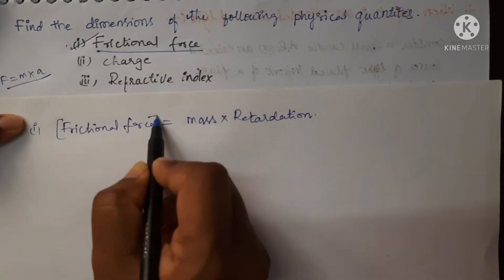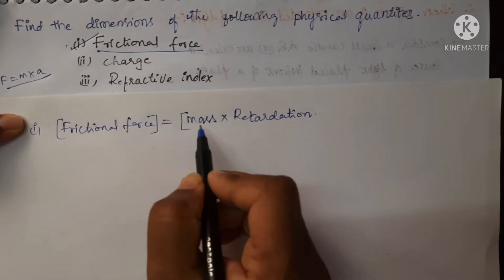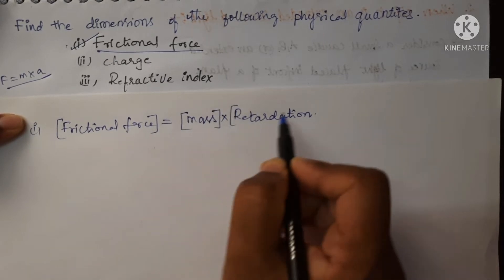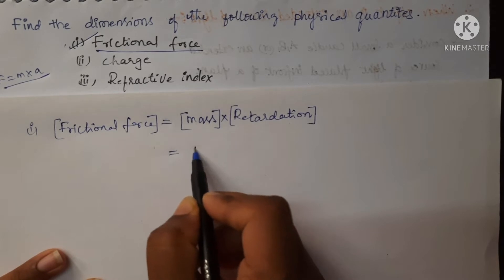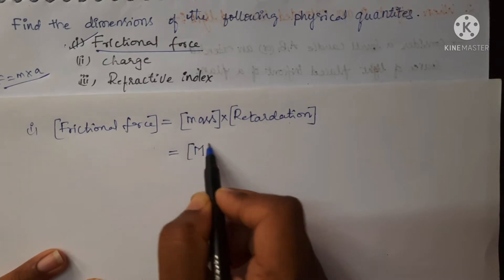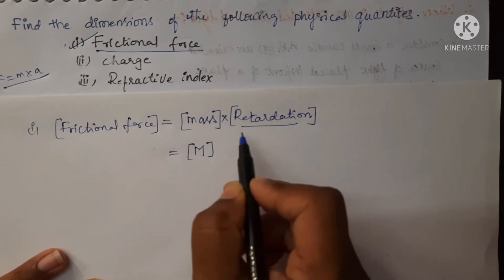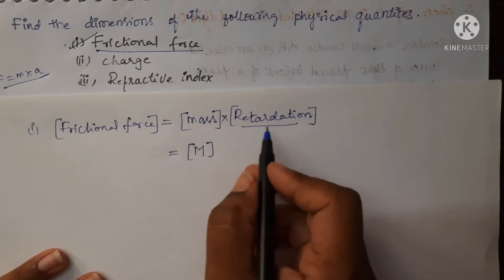Here we are finding the dimensional formula of frictional force. First, write the dimensional formula for mass. Mass is M, and in the place of retardation, we will write the dimensions of acceleration.